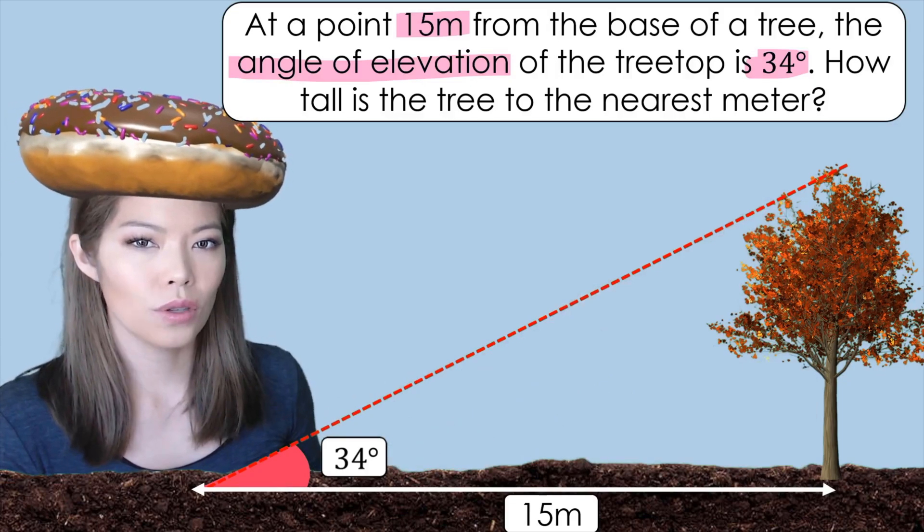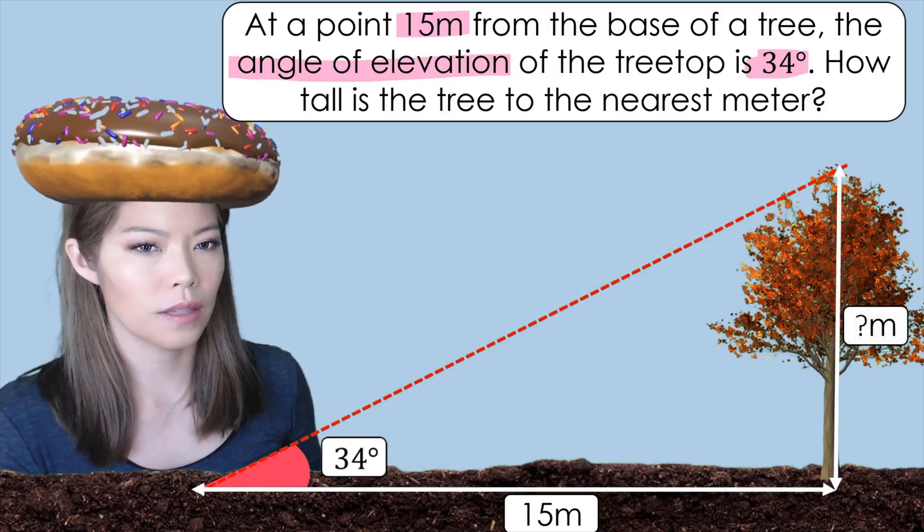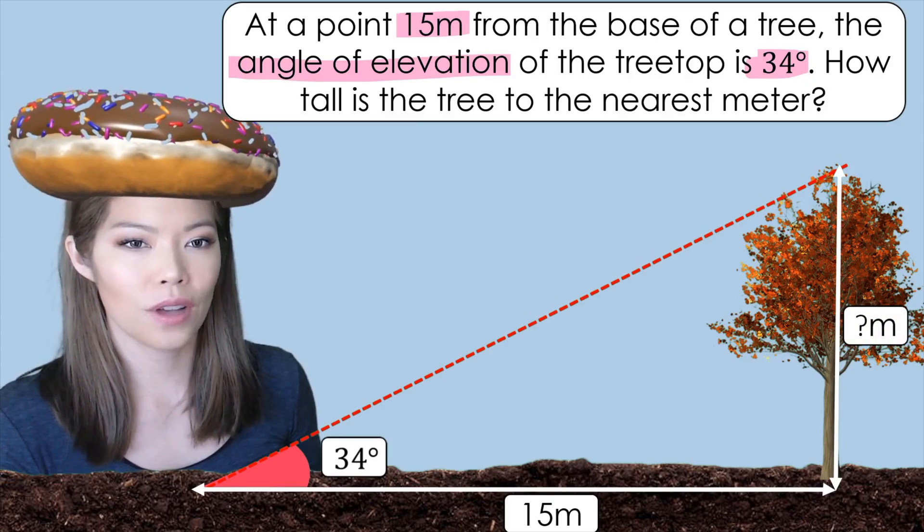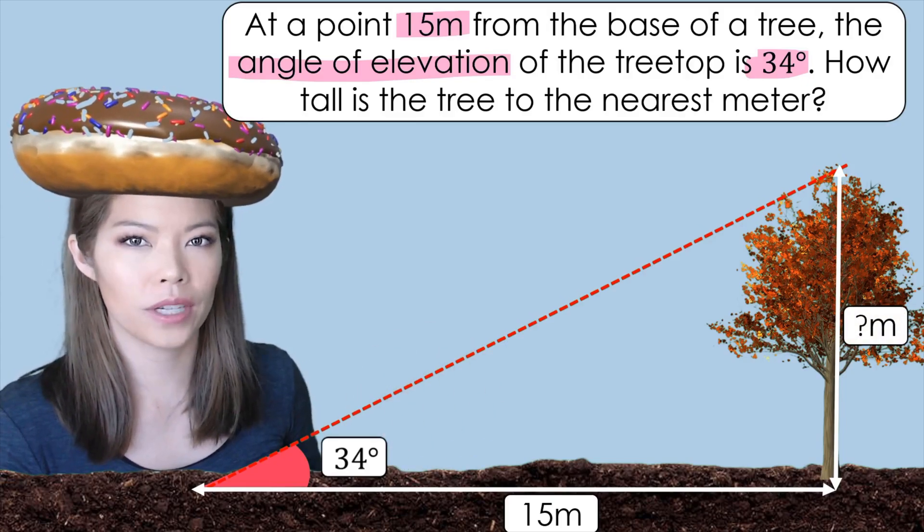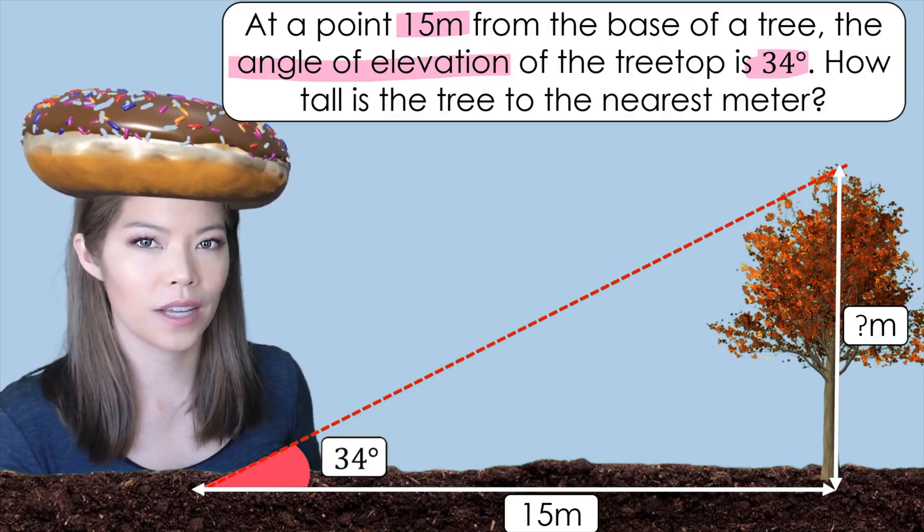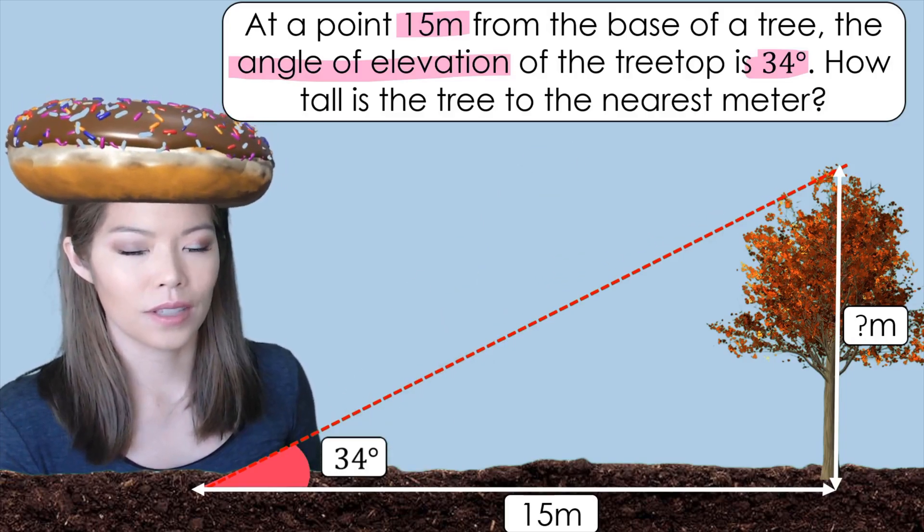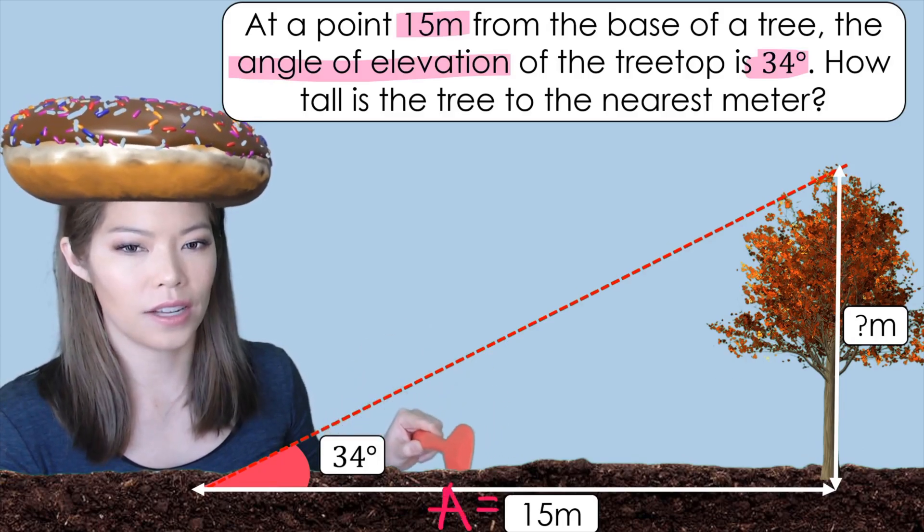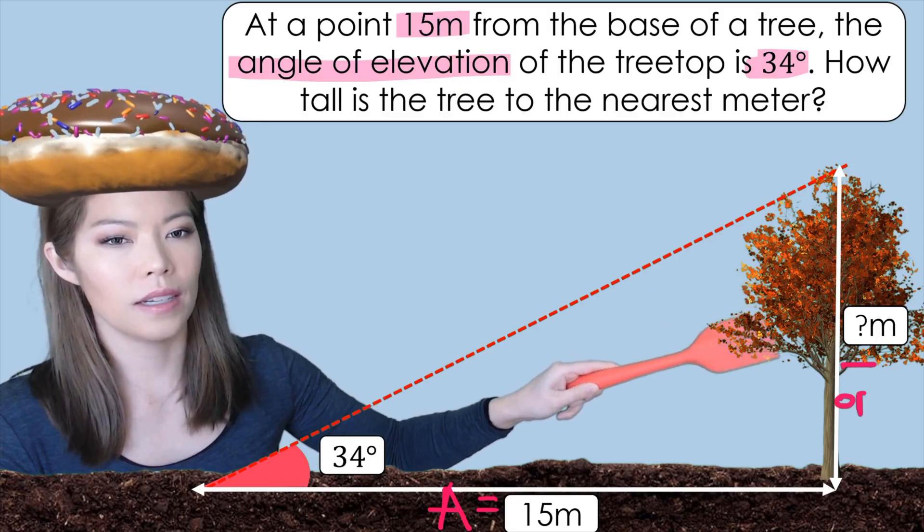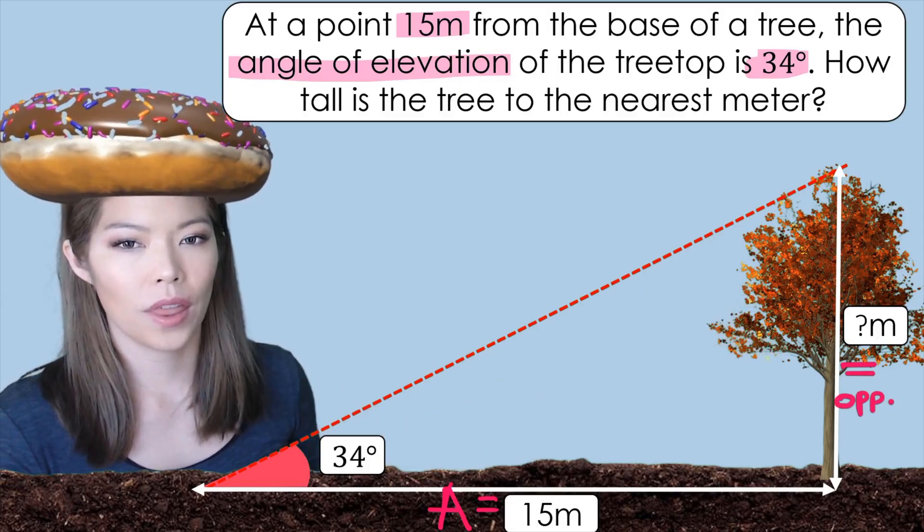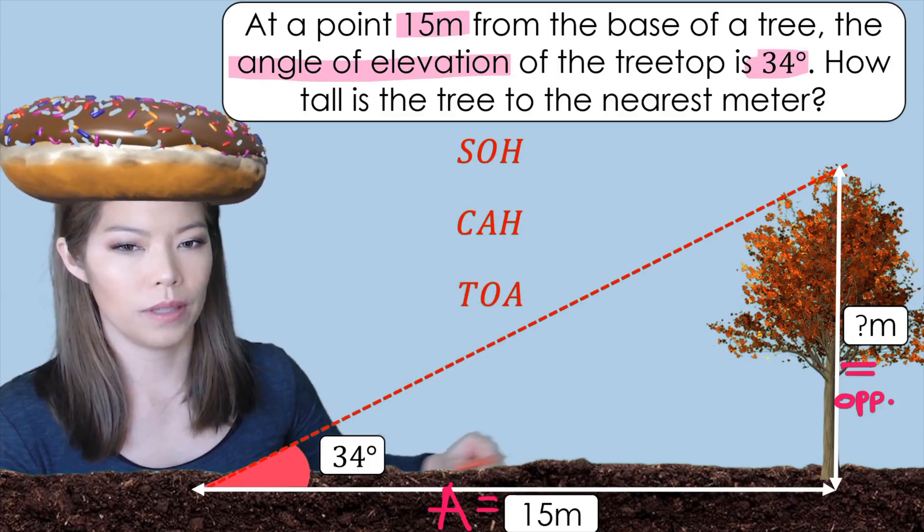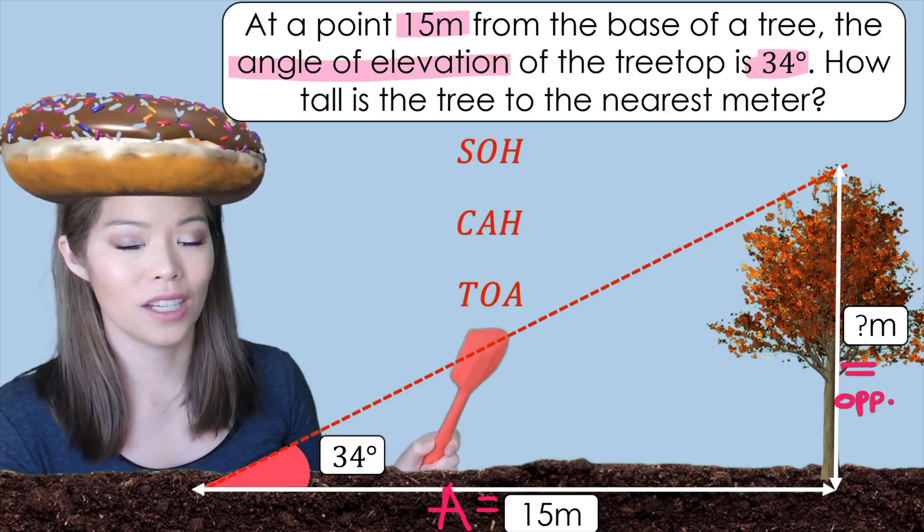So how tall is the tree to the nearest meter? Now if you've forgotten how to solve these type of trigonometric equations, click on the i in the corner and it'll take you to that video. So step number one, we label next to the angle it's the adjacent and on the opposite it's the opposite. Then we think SOH CAH TOA. Which of these matches opposite and adjacent? It is TOA.